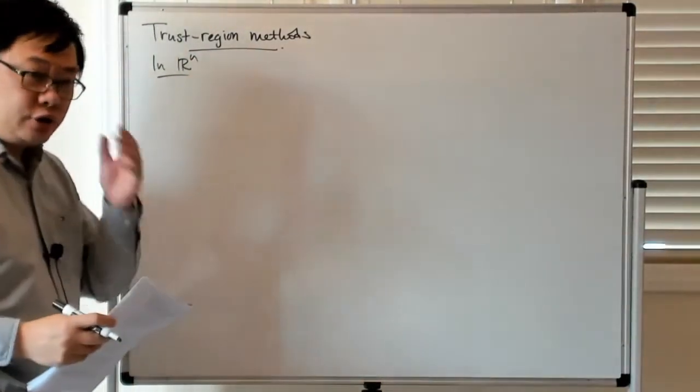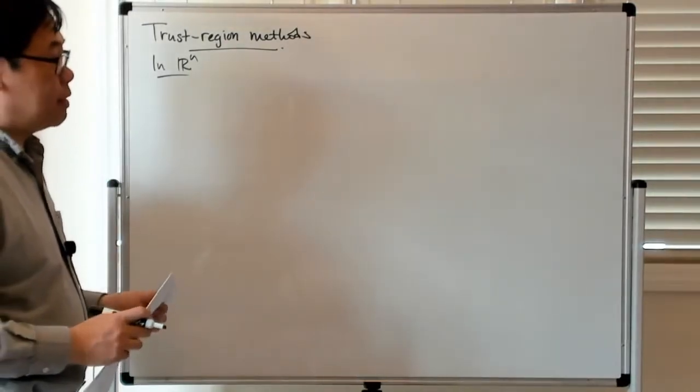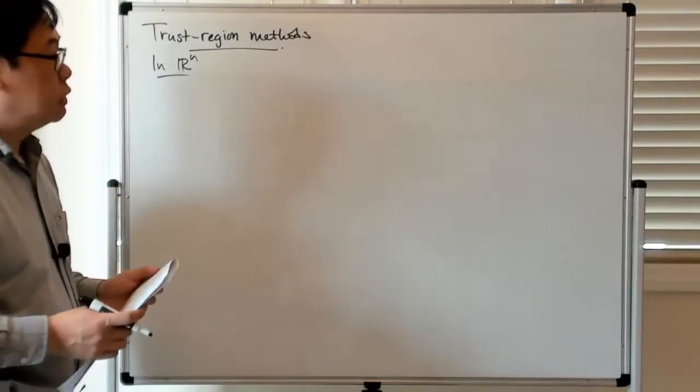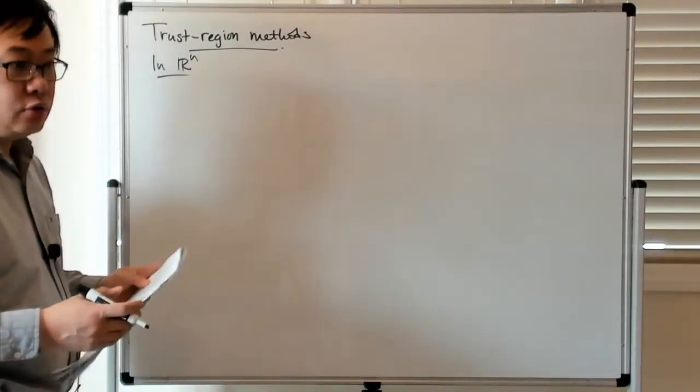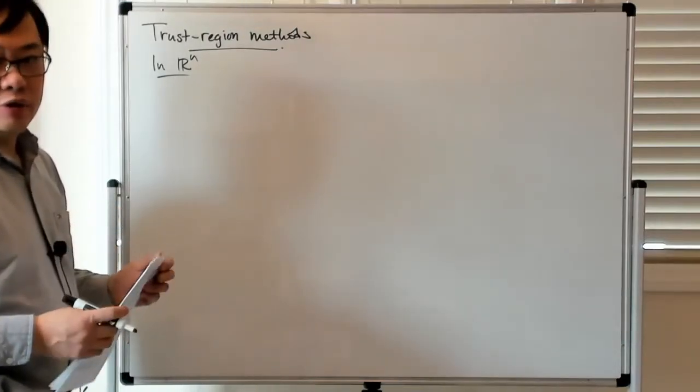So the basic idea behind a trust region method is that there is a subproblem where you try to find a minimizer of a quadratic model, but you're constrained to only search for some ball around the current point you're in.